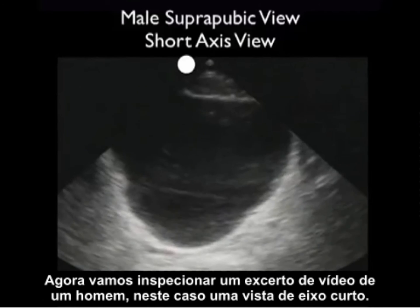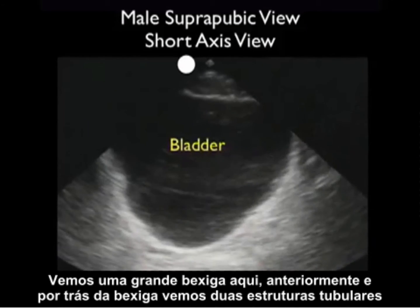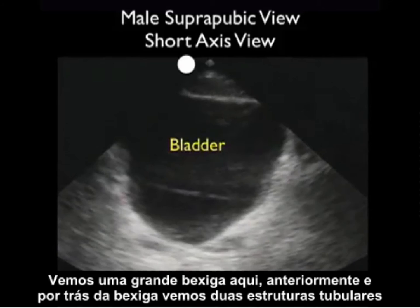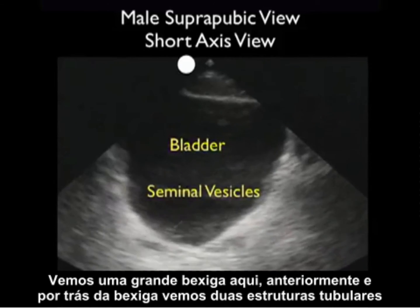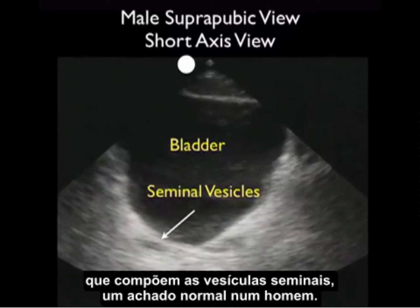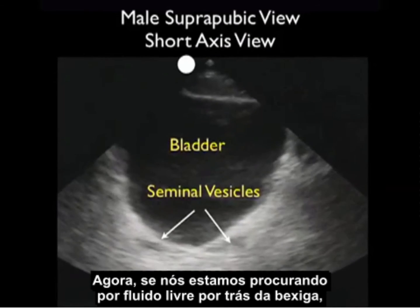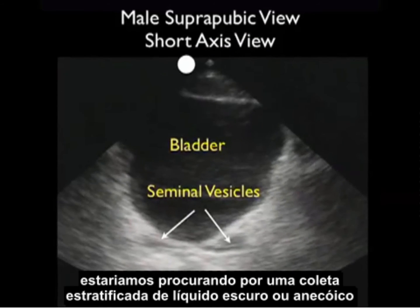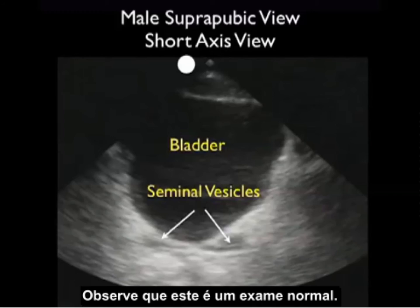Now let's inspect a video clip from a male — in this case a short axis view. We see a large bladder anteriorly, and behind the bladder we see two tubular structures making up the seminal vesicles, a normal finding in a male. If we're looking for free fluid behind the bladder we'd be looking for a dark or anechoic fluid collection layering out behind the bladder. Notice this is a normal examination.